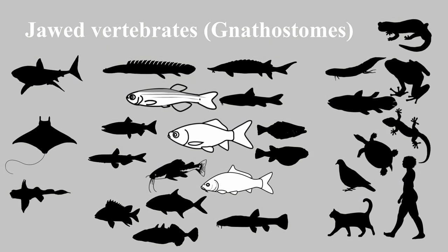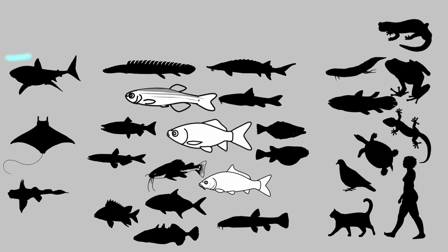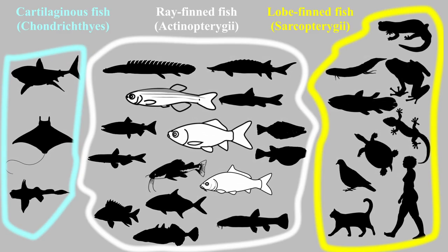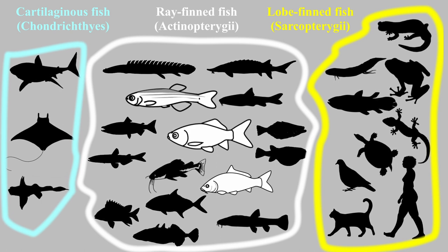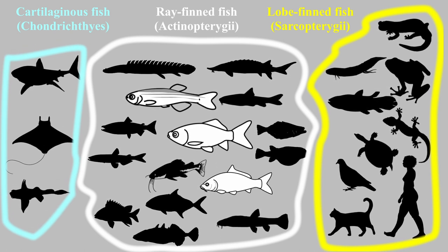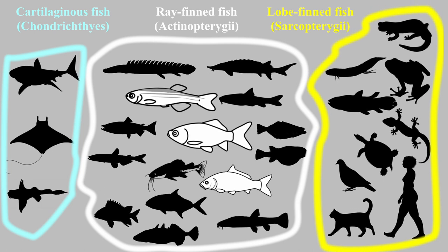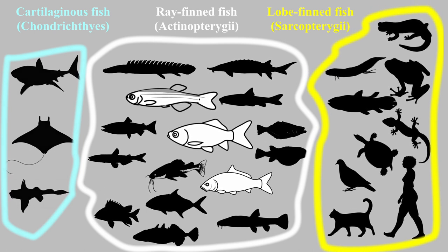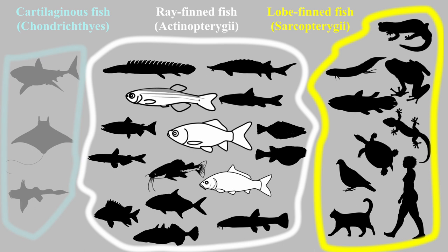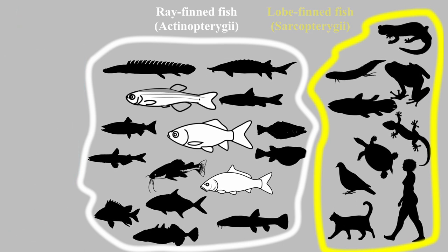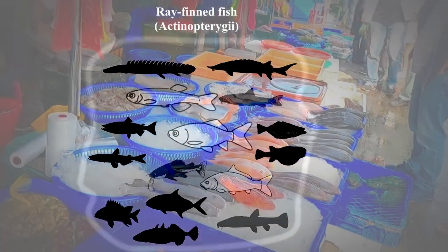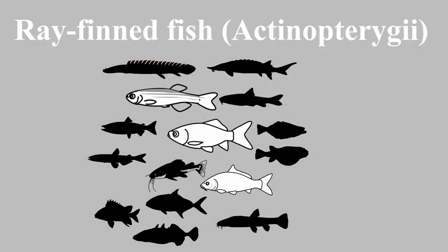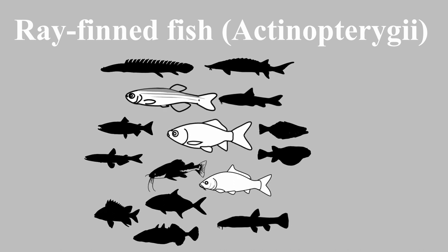Living jawed vertebrate species include cartilaginous fish, lobe-finned fish, and the ray-finned fish group. Sharks and rays are cartilaginous fish. Mammals, birds, reptiles, amphibians, lungfish, and coelacanths belong to the lobe-finned fish. Most of the bony fish species on the fish markets are categorized into the ray-finned fish group, and goldfish are also included in this group.